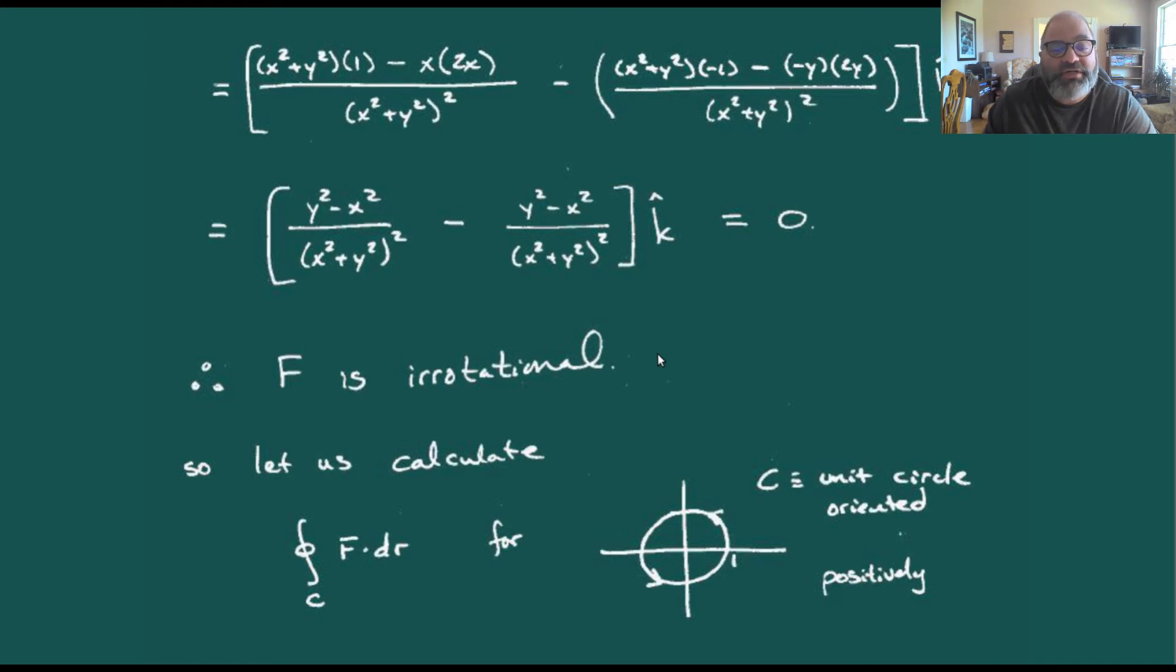So the curl of this thing is zero. But now, let's take the unit circle, and we're going to orient that thing positively, going counterclockwise. Let's compute the integral over this loop of F dot dr.